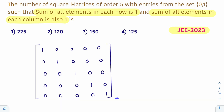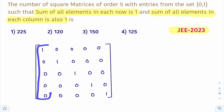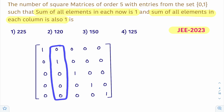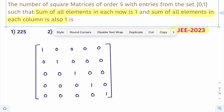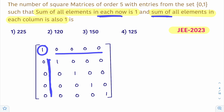Consider a square matrix of order 5. The sum of all elements of the first row is 1, and the sum of all elements of the first column is 1. Similarly, the sum of all elements of each row and each column is 1. The basic idea is: if you write 1 in a position, all remaining elements in that row and that column must be 0. Only then is this condition satisfied.